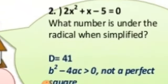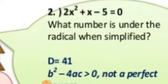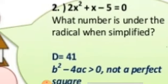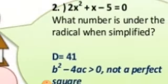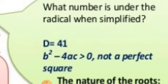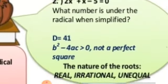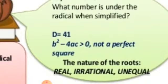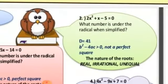Second case: for the equation 2x² plus x minus 5 equals zero, we find the discriminant using b² minus 4ac and we get 41. It is also greater than zero, but 41 is not a perfect square. So the nature of the roots is real and irrational, and unequal.